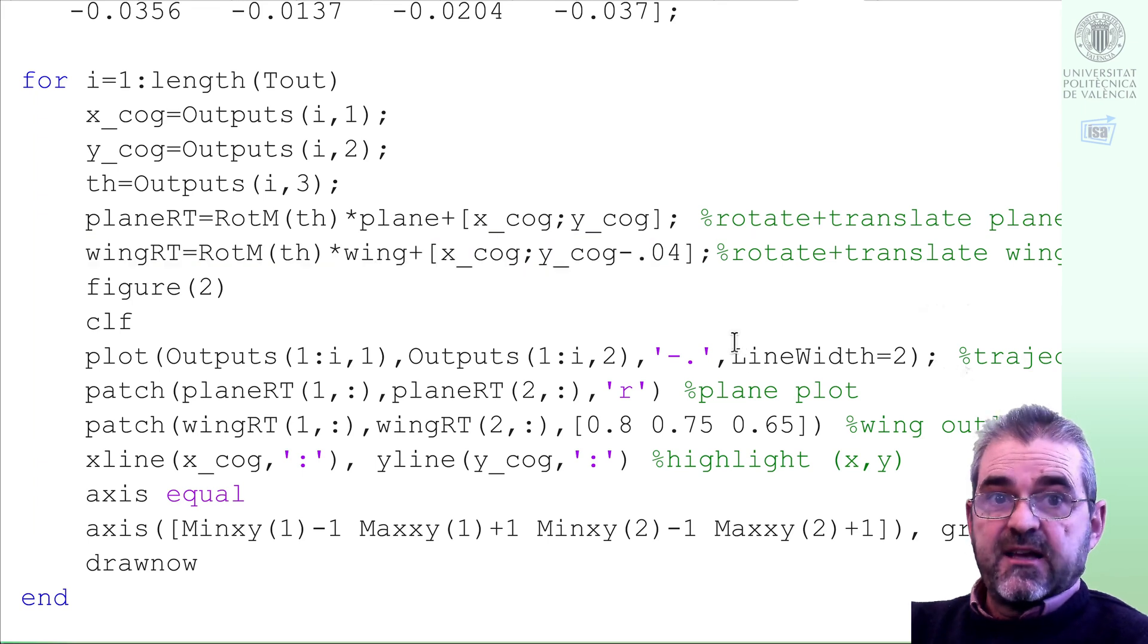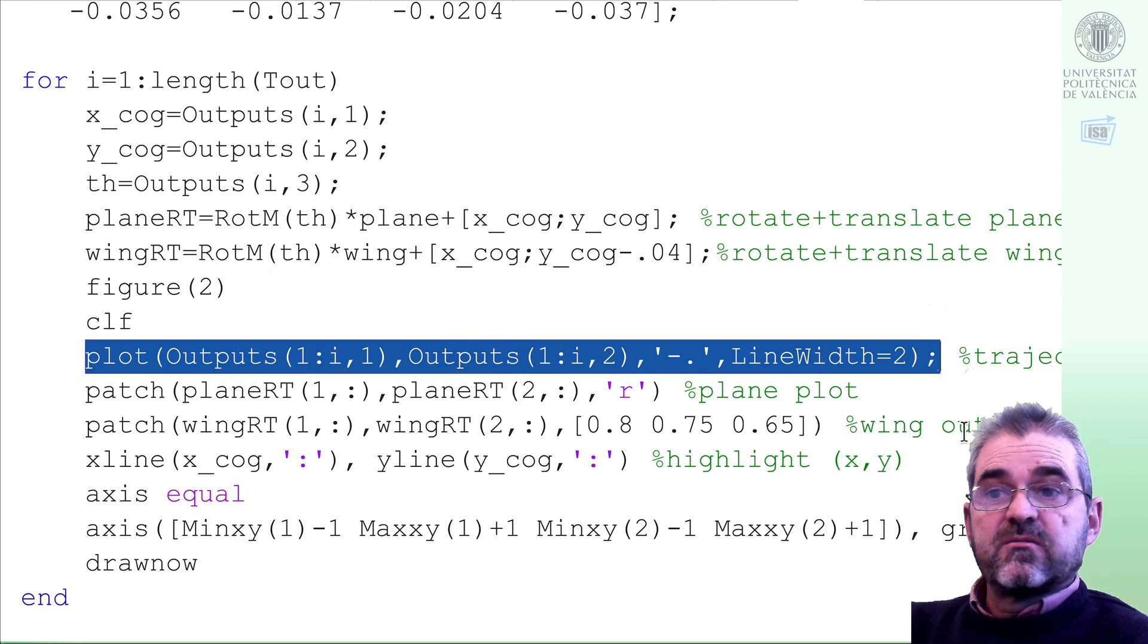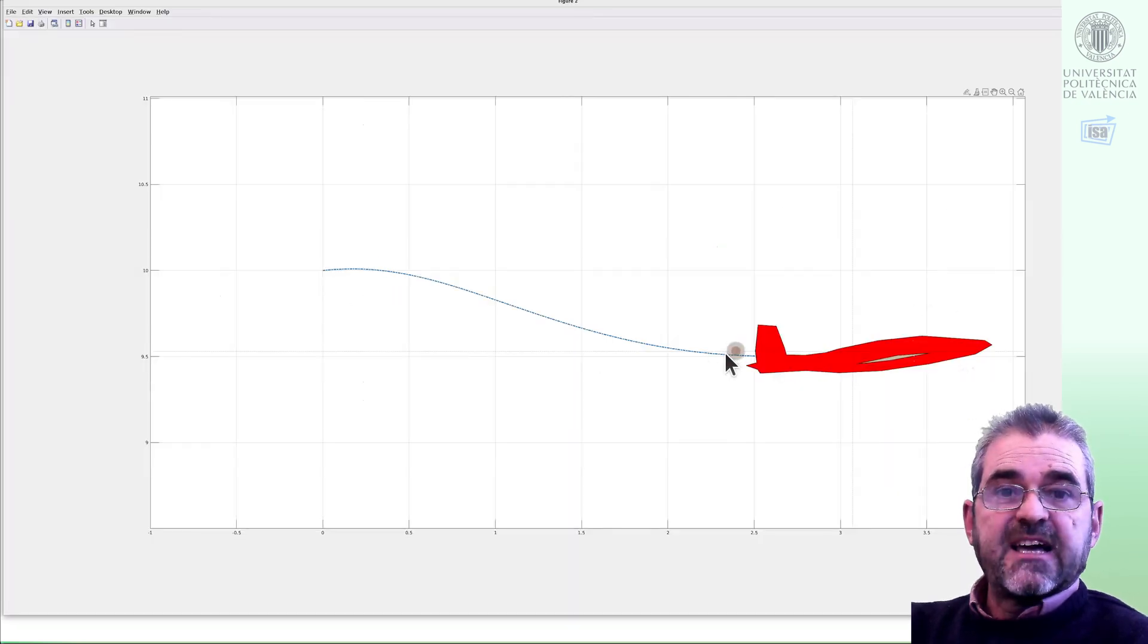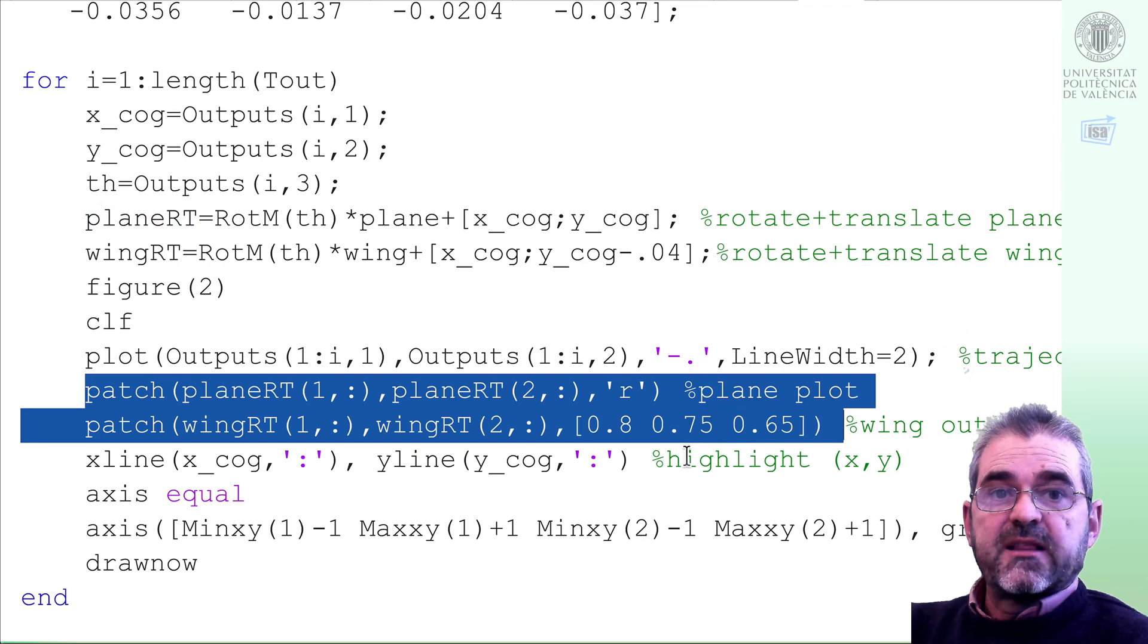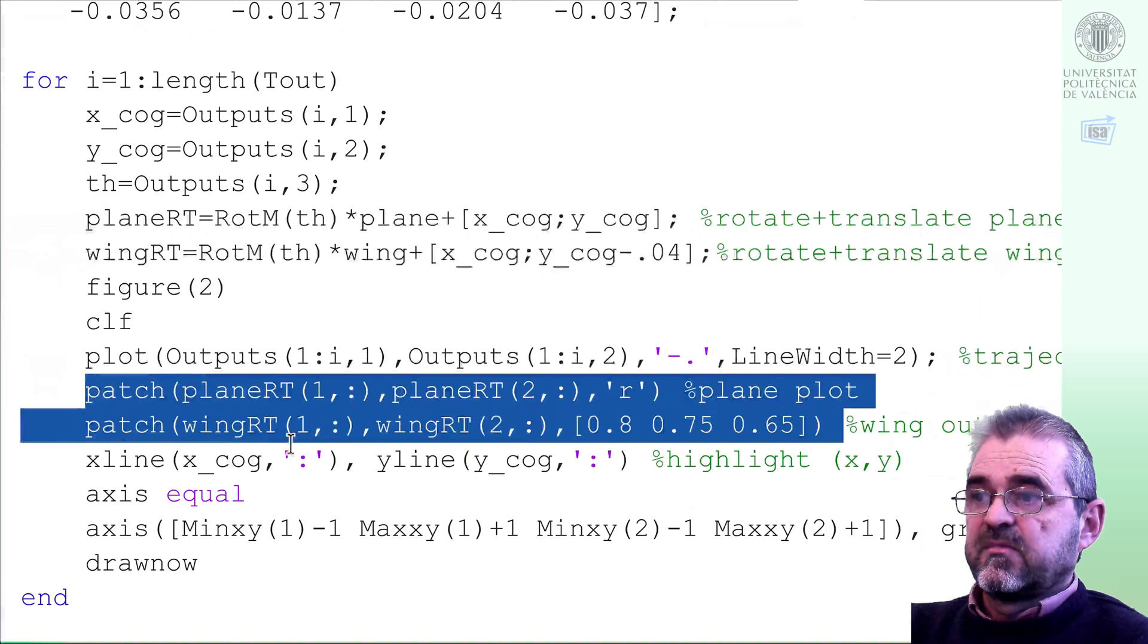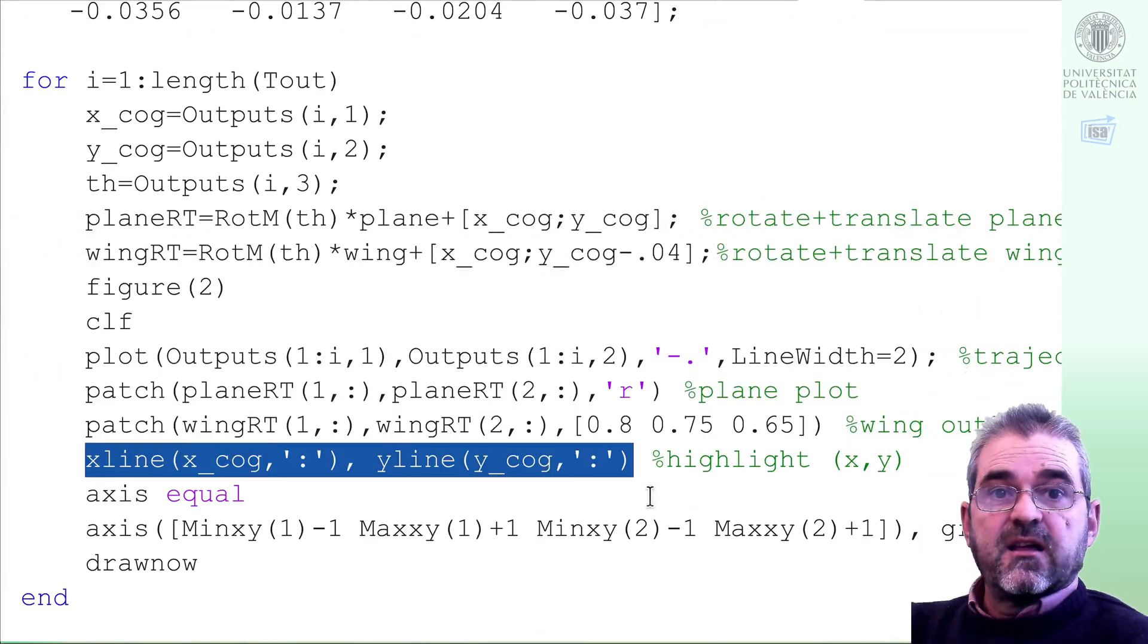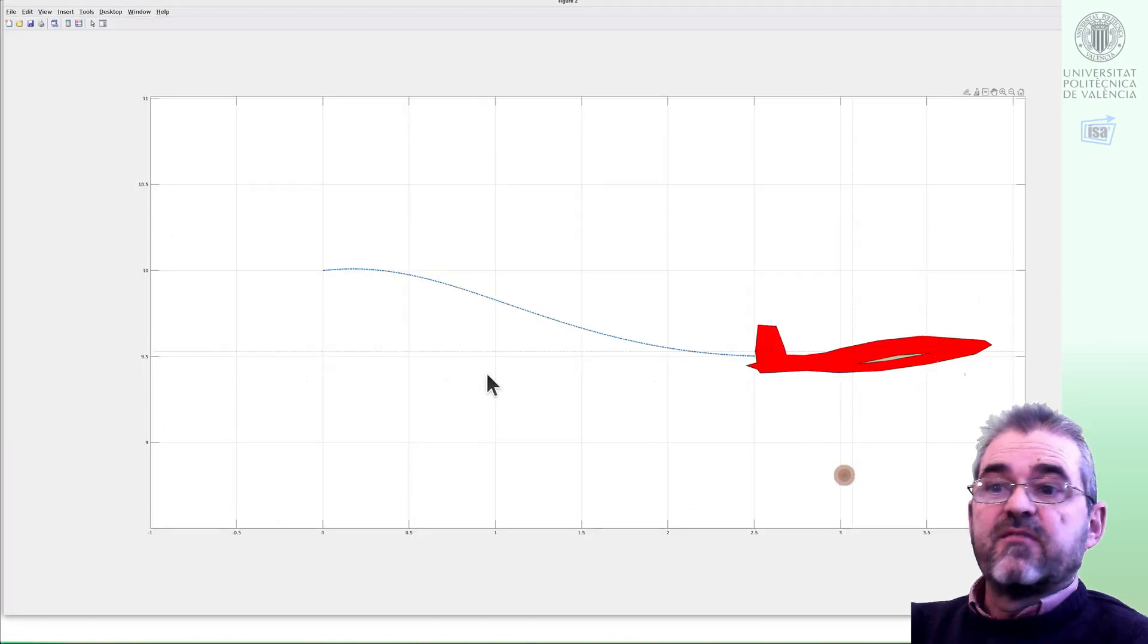Once we have the plane outline at the correct place and pitch angle, then we go to the figure we wish to draw onto. And with this plot, we plot the trajectory, this blue dashed line for a better interpretation of what the plane is doing. And these two patch commands plot the plane and the wing in here.